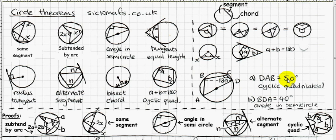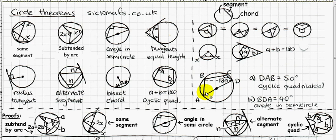Using the cyclic quadrilateral theorem, opposite angles must add to 180 degrees. So 130 plus something equals 180, meaning angle DAB must be 50 degrees, since 50 plus 130 makes 180.